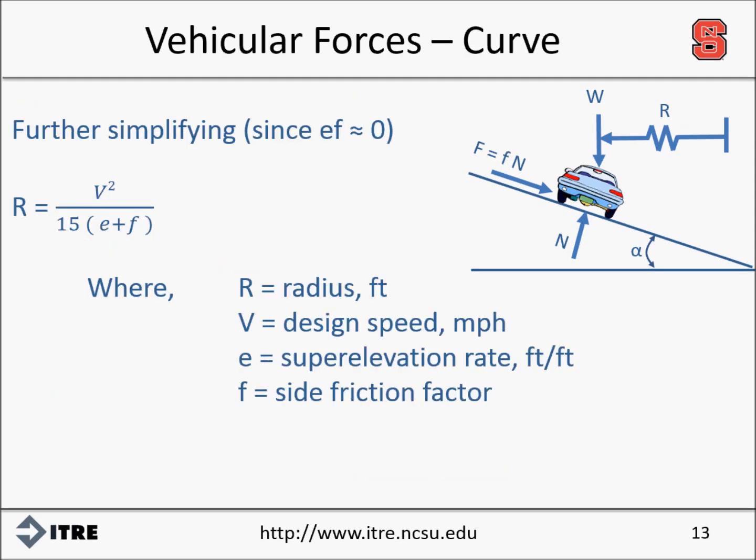For highway design purposes, it is common to solve this relationship for the radius so it can be directly applied to roadway design. Our previous equation includes the term 1 minus E times F. However, E times F is very small and can be assumed as zero for highway design purposes. Therefore, the equation for R is V squared divided by 15 times (E plus F), where R is the radius in feet, V is the design speed in miles per hour, E is the superelevation rate in feet per foot, and F is the side friction factor. Due to the wide variations of vehicle speeds on a curve, the side friction factor applied in design is usually substantially less than the coefficient of friction at the point where a vehicle would begin to skid. Many factors within the variables of this equation play into the overall relationship, including the weather and the type and condition of both the pavement and the vehicle's tires.